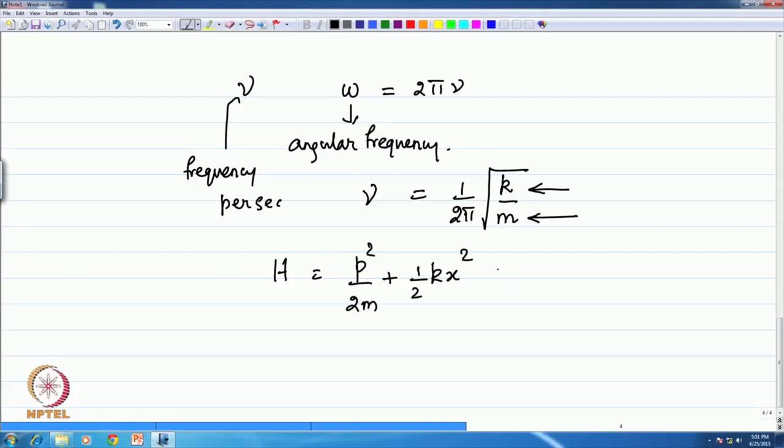If you want to write it using the angular frequency you can write this as p square by 2 m plus half m omega square x square. So, this is the classical Hamiltonian.